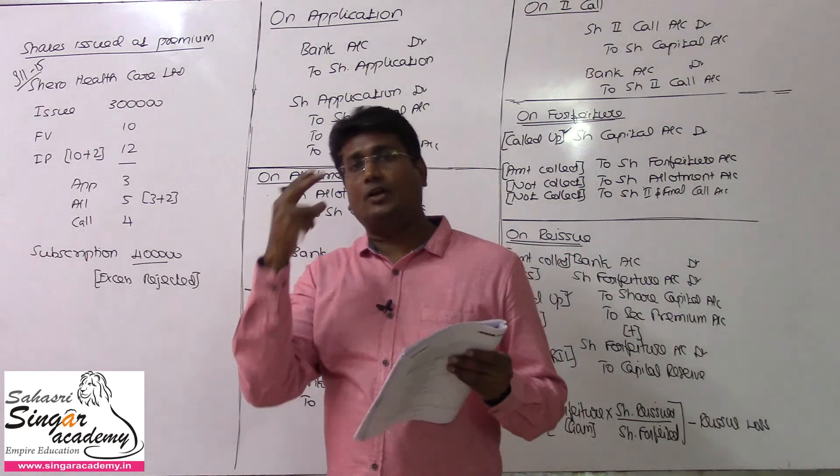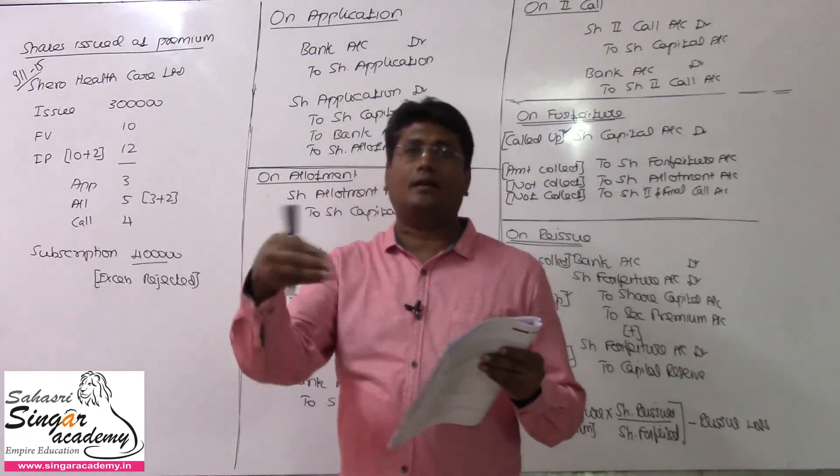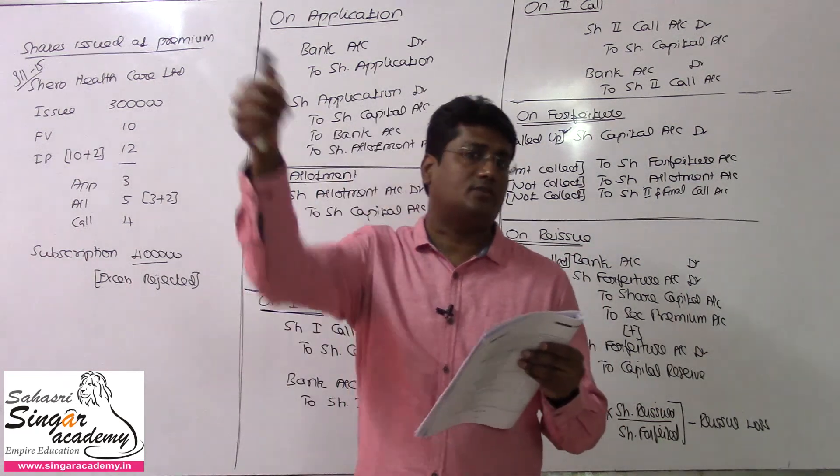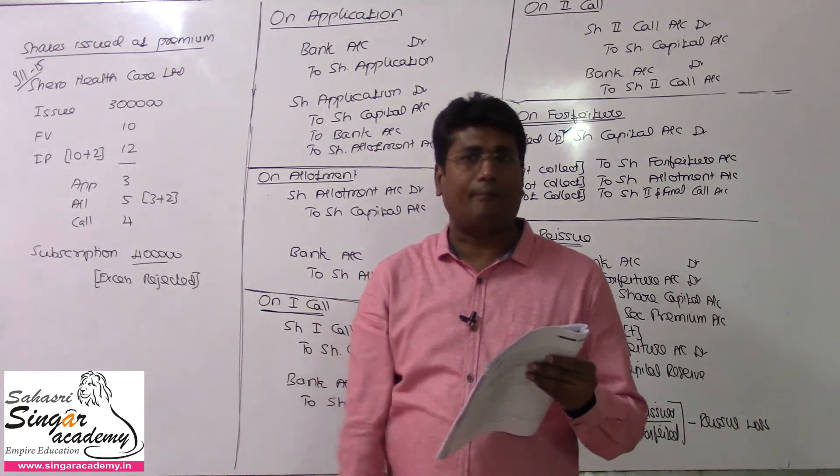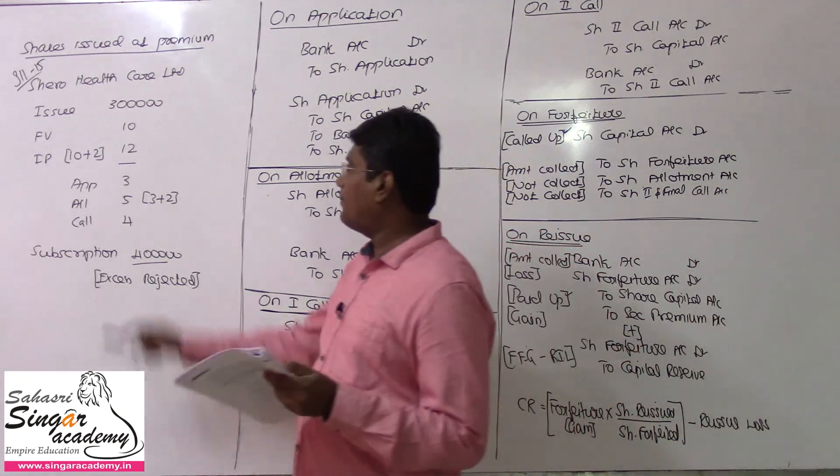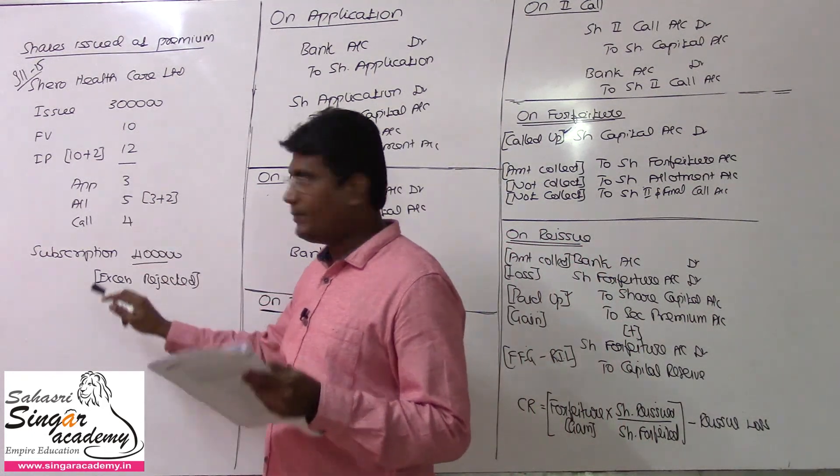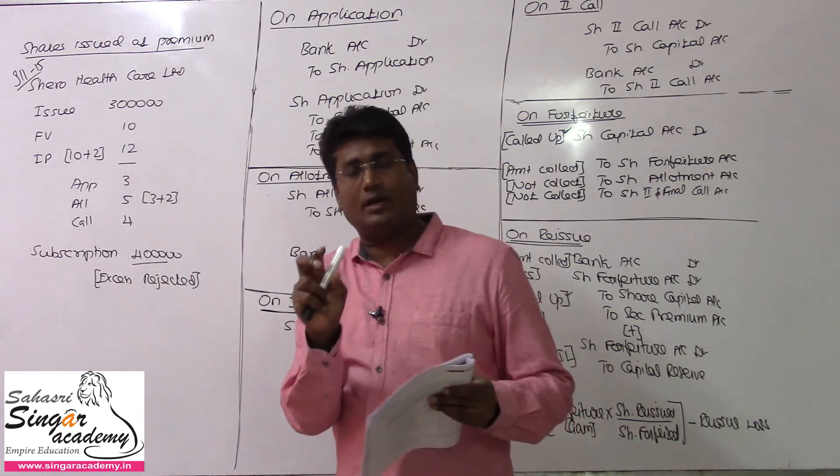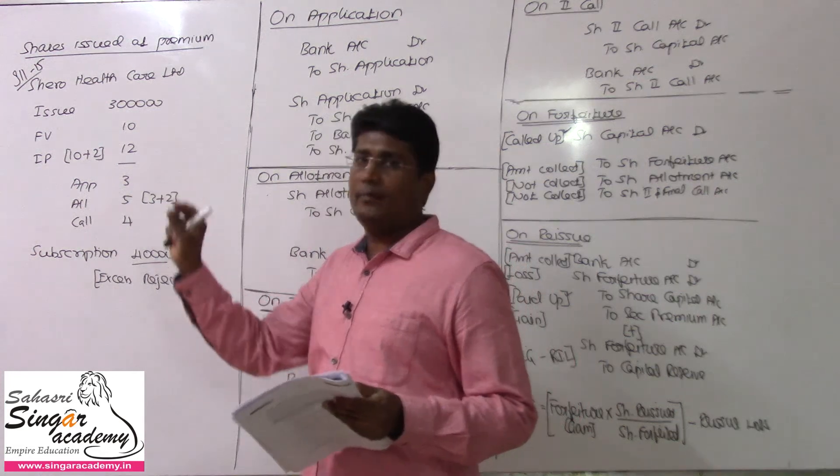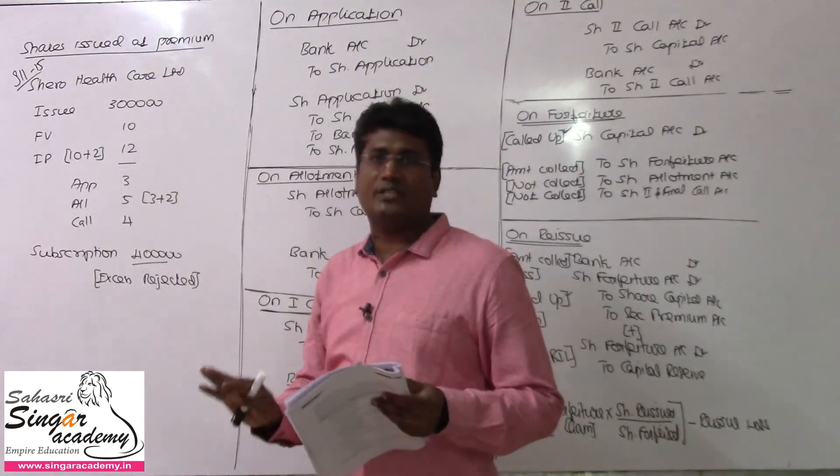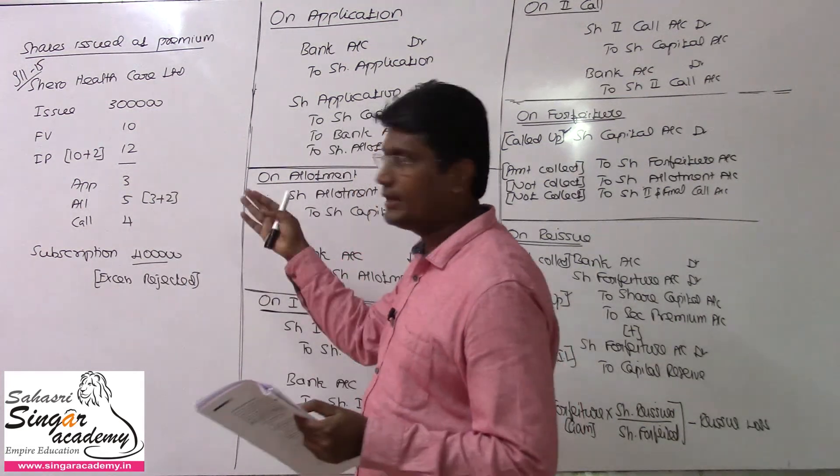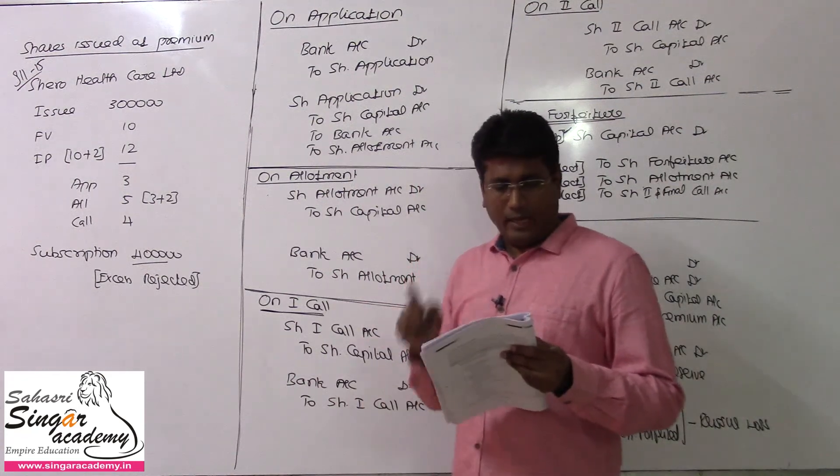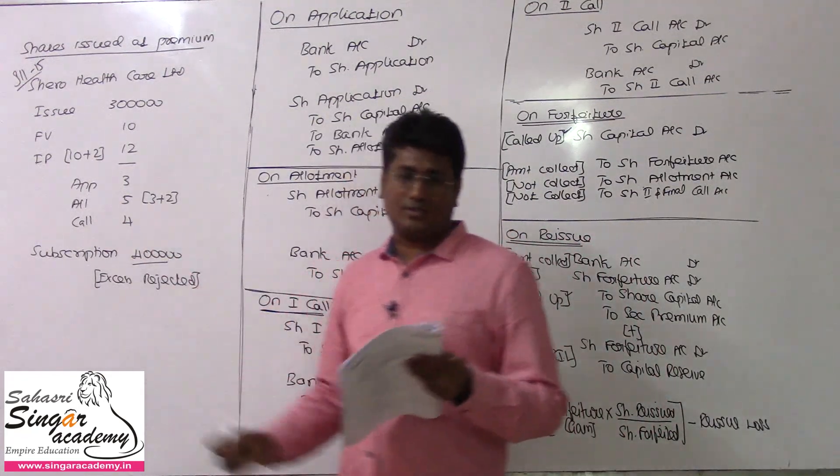Issue price is 12 rupees total. Collection schedule: Application 3 rupees, Allotment 5 rupees including the 2 rupees premium - usually we collect premium with the allotment - and 4 rupees on first and final call.